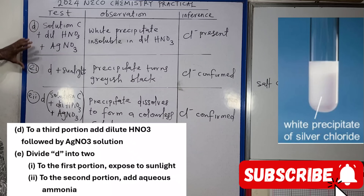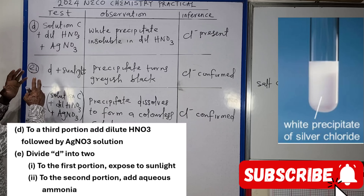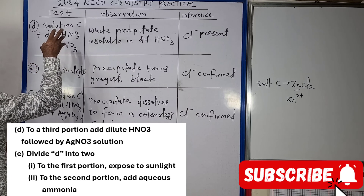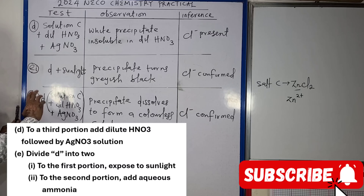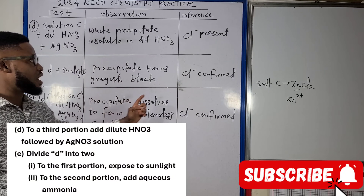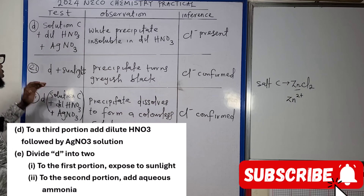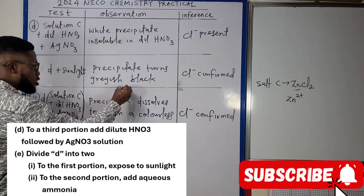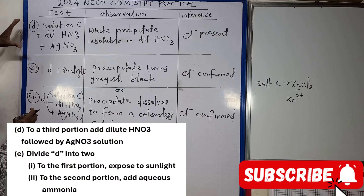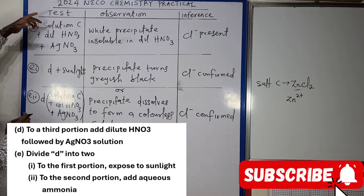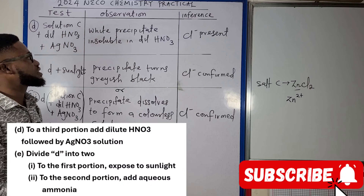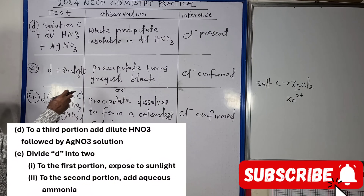Question E says: divide the precipitate from D into two portions. To the first portion, expose it to sunlight. When we expose the white precipitate from question D to sunlight, it turns grayish-black. That confirms the presence of chloride ion. As you can see on your screen, that is one way of confirming chloride — the white precipitate of AgCl turning grayish-black in sunlight.